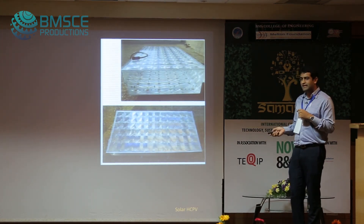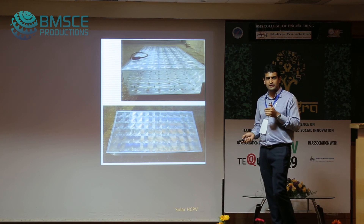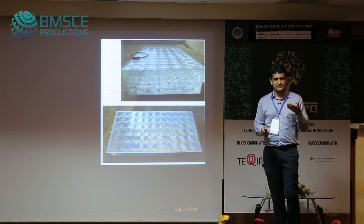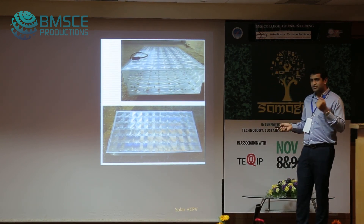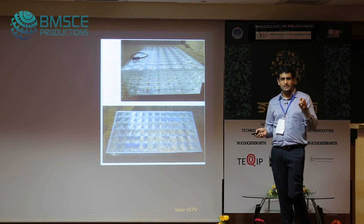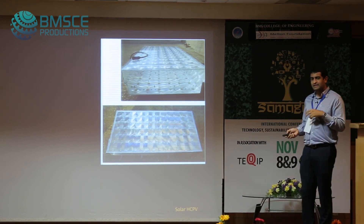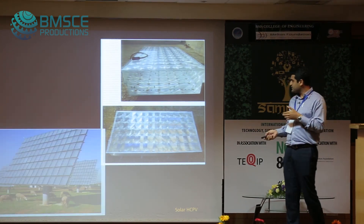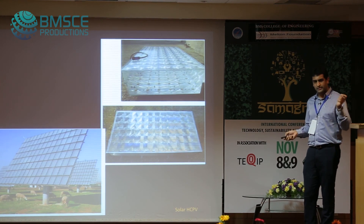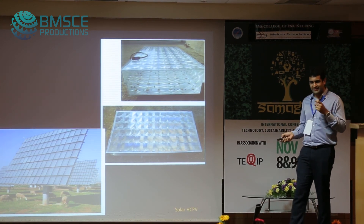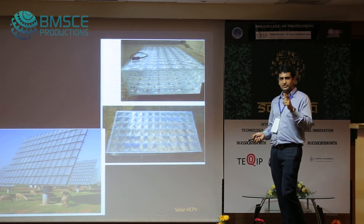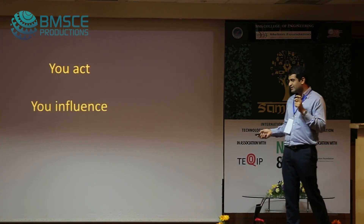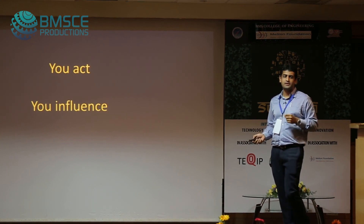Another project is the solar HCPV technology. Current panels available in the market are about 11 to 14 percent efficient using monocrystalline film. This new technology, which has its first embedding at Lawrence Berkeley Lab in Berkeley, can produce up to 43 percent efficiency in conversion from solar to electricity — a very promising technology. If we can act, we can definitely influence the way people think, and the world could be a better place to live in.